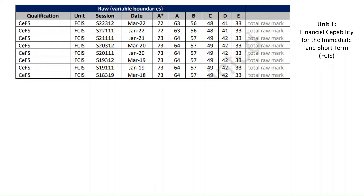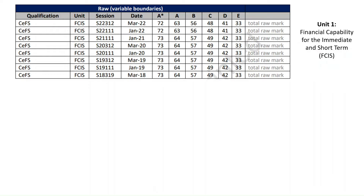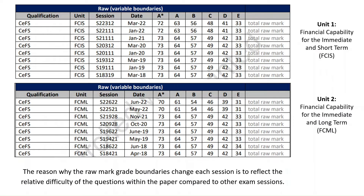E, however, has remained constant at 33 out of 100. For the Unit 2 exam — the one you took in Year 12 or whenever you did the Certificate in Financial Studies — similar trends. Back in 2018, you needed 73 out of 100 to get an A star, 64 for an A, etc. By the time 2022 came about, you only needed 70, or 61 in the case of an A. The reason why raw mark grade boundaries change each session is to reflect the relative difficulty of the questions within that paper compared to other exam sessions.